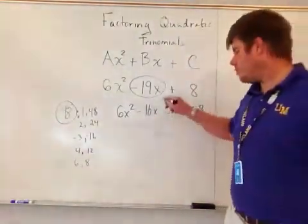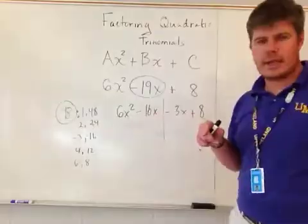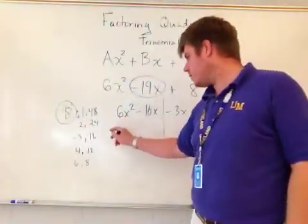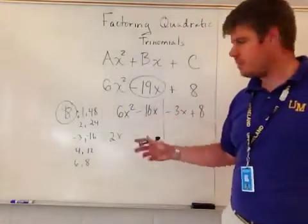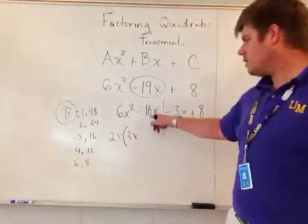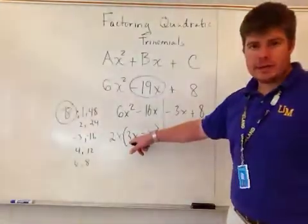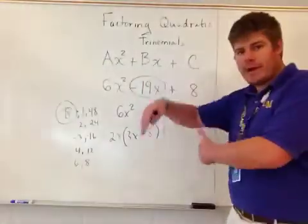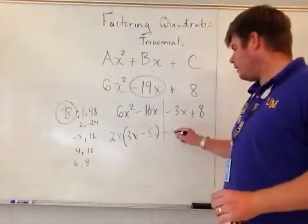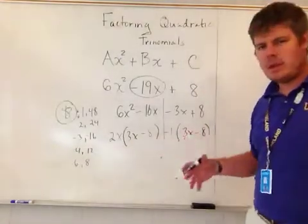Let's check. If I write this down the middle again, the GCF of 6x² and negative 16x is 2x. Taking 2x out, I'm left with 3x - 8. Over here, this 3 is negative, so I factor out negative 1, leaving 3x - 8. That turns into the same group.